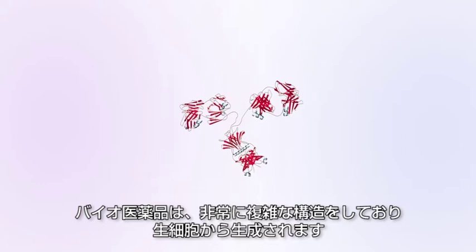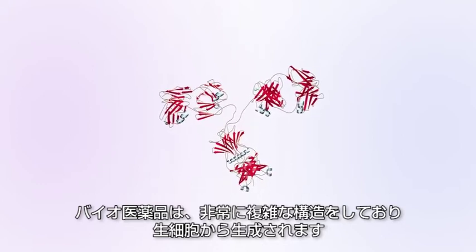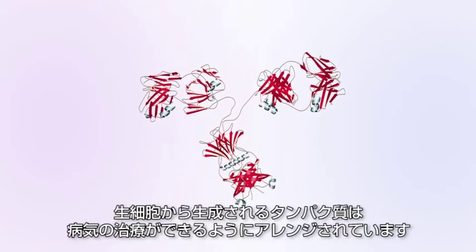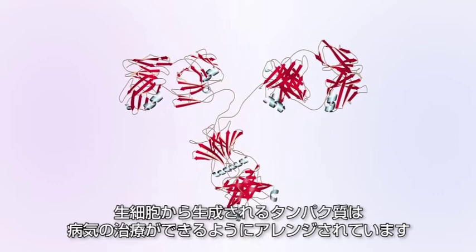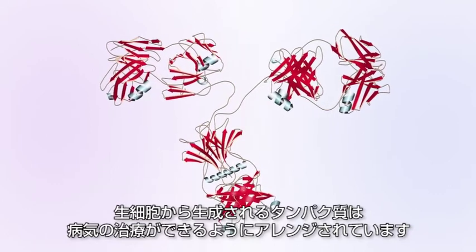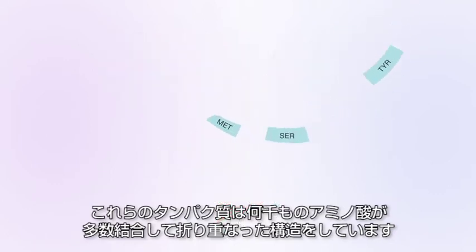Therapeutic proteins are complex molecules produced by living cells that treat a range of diseases. These proteins are long folded polymers made up of amino acid chains. There can be thousands of amino acid residues present within a therapeutic protein.